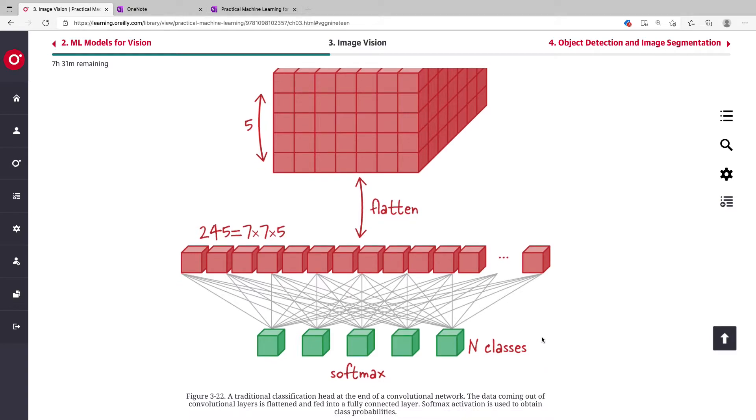Researchers observed that doing this, the number of parameters that need to be learned is enormous, making computation very costly. For instance, the number of learnable parameters would be 24 times 7 times 7 times 5, times whatever N is.